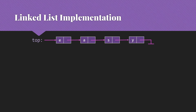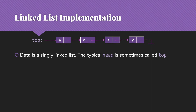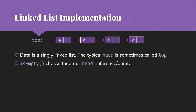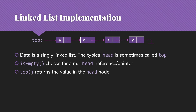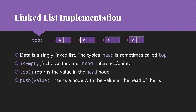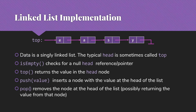The linked list implementation is one of the simplest things you can do with a linked list. The data is simply a singly linked list — we're only working at one end, so there's no reason for a more complex list. We keep a nice, simple singly linked list with no empty head node. The typical head pointer we might call head, but we might also call it top as in the drawing here. isEmpty simply checks for a null head reference. The top function returns the value in that first node. Push inserts a new node at the head of the list, and pop removes the node at the head, possibly returning the value.